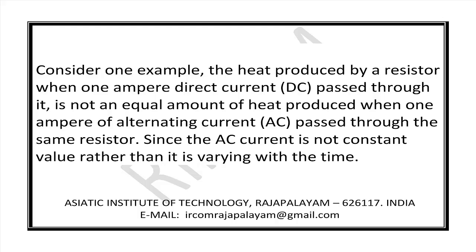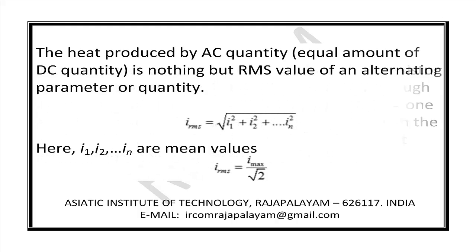Consider one example: the heat produced by a resistor when 1A direct current is passed through it is not equal to the heat produced when 1A of alternating current is passed, because DC is a constant value rather than varying with time. The heat produced by an AC quantity equal to an equivalent DC quantity is nothing but the RMS value of that alternating quantity.